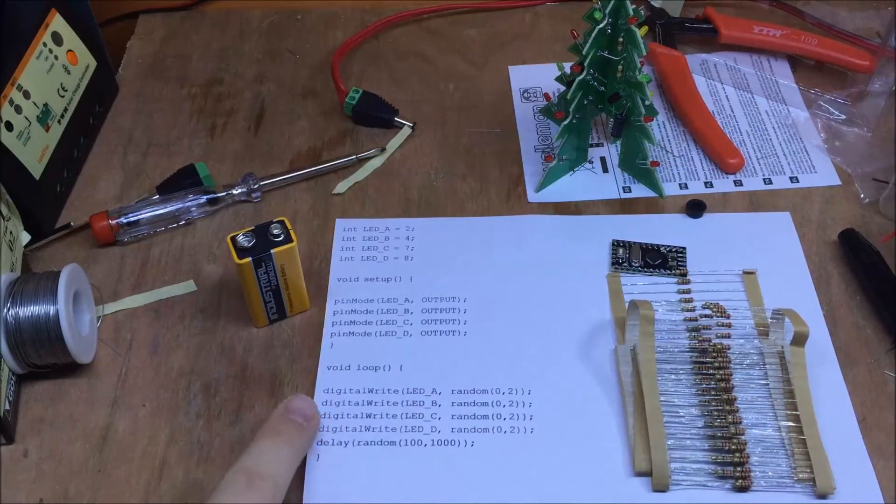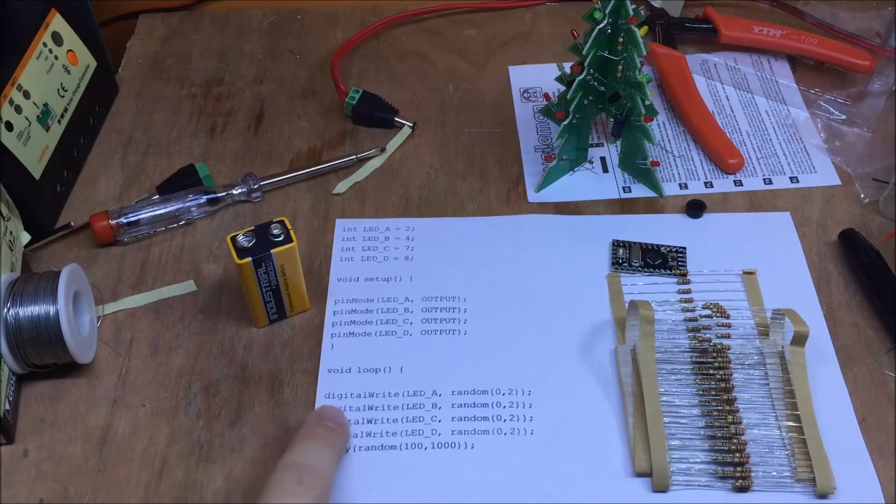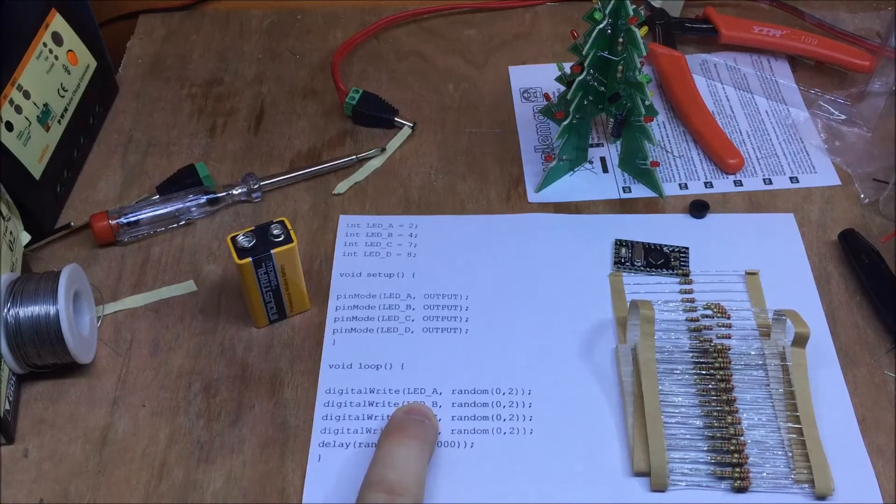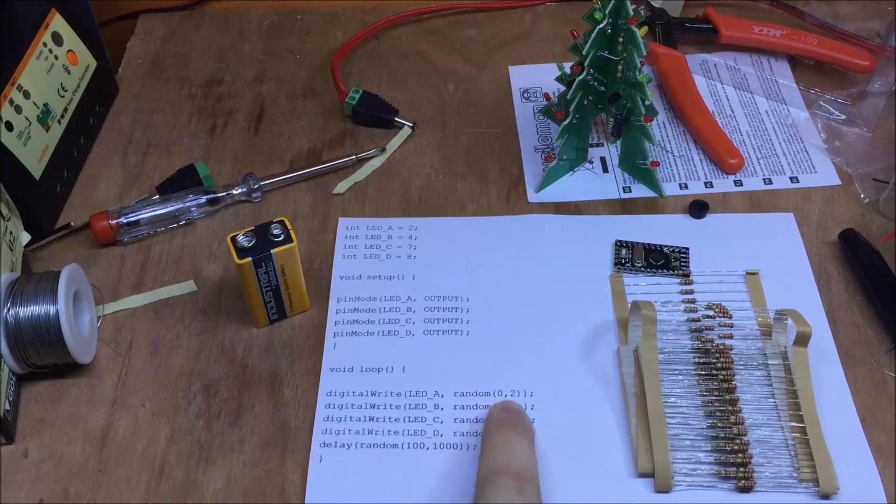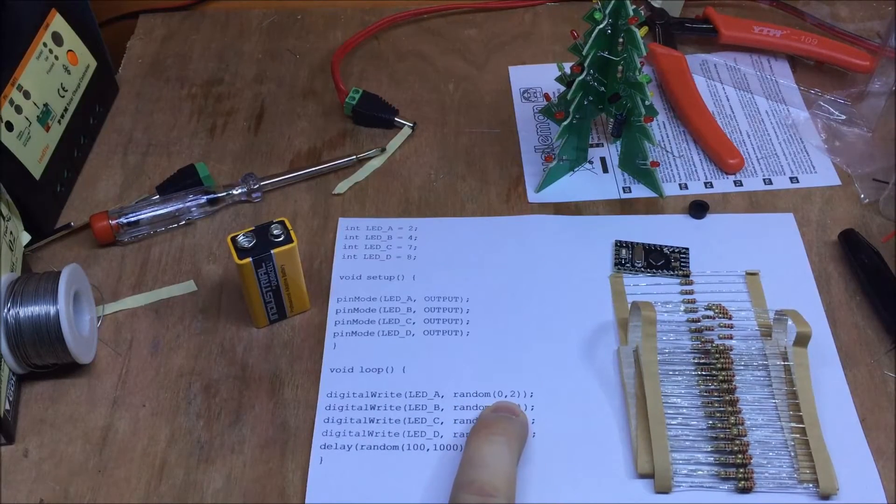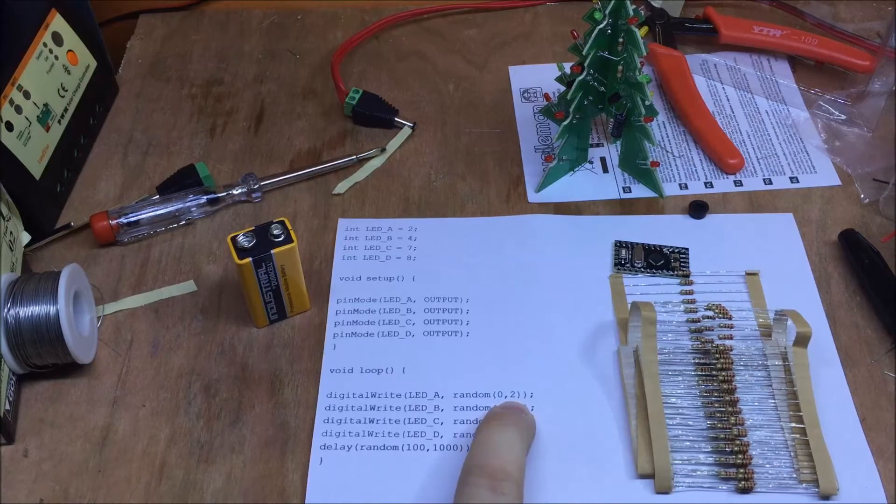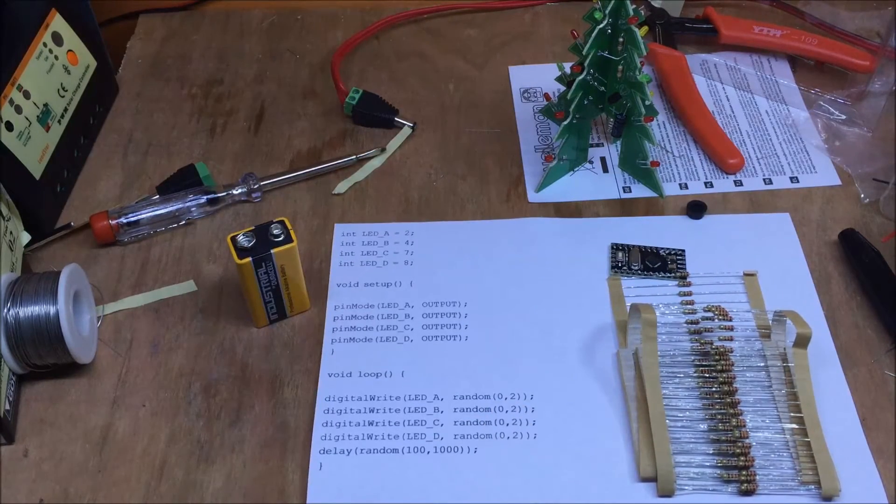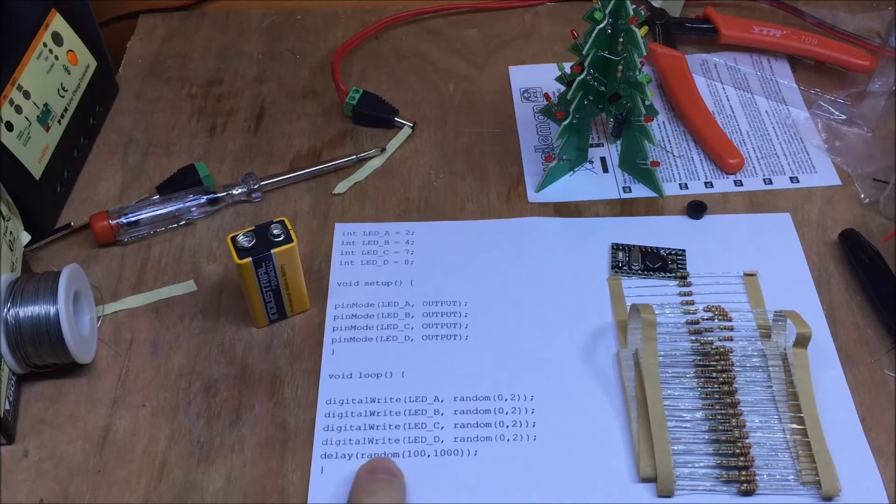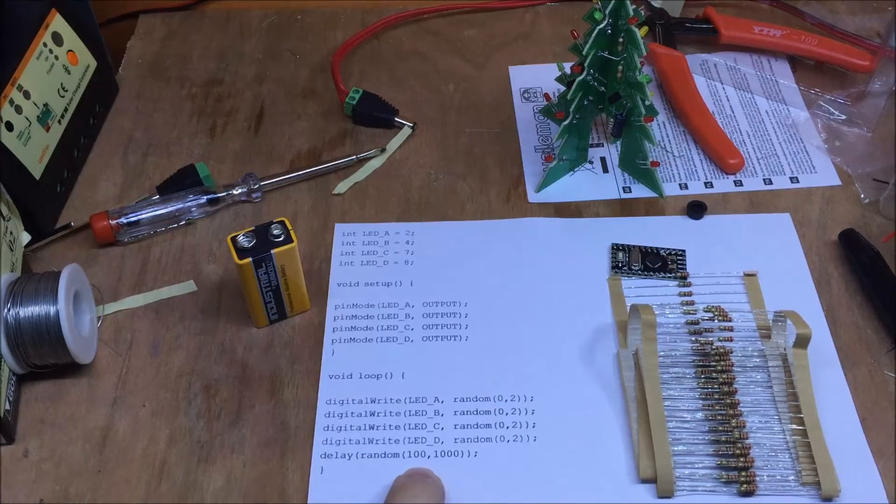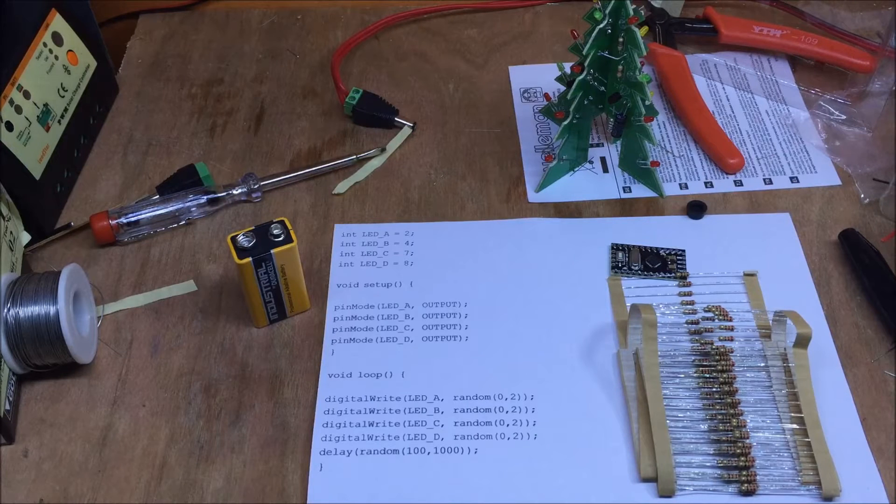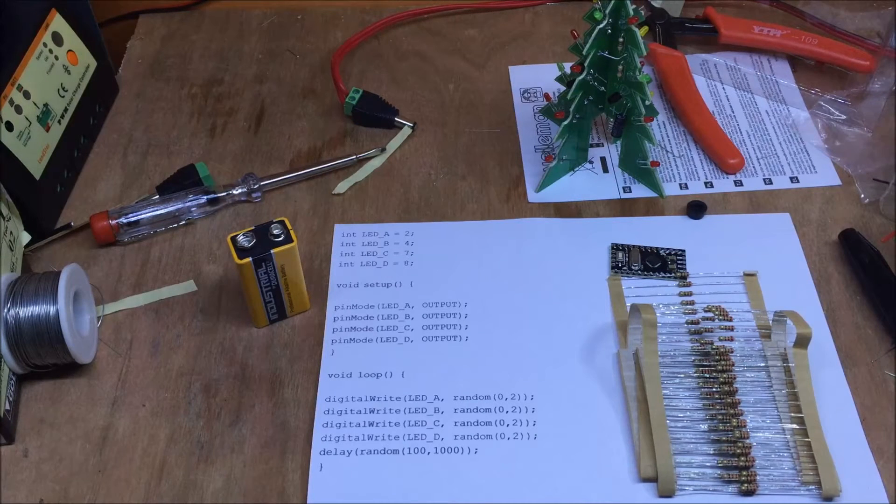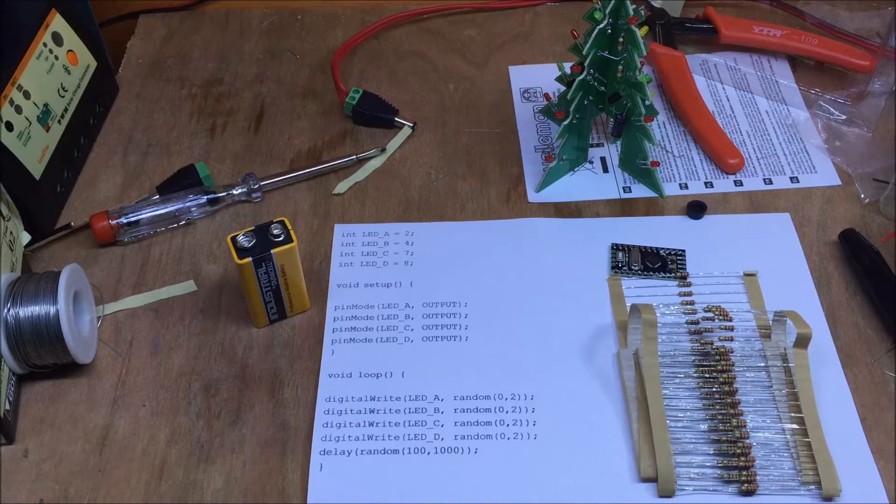Set them all up as output, and the loop is quite simple. We just digital write to each of the LED pins a random, which the lowest it can be is 0, and it needs to stop before it gets 2. I think that's right. And we've also then delayed of random between 100 milliseconds and 1,000 milliseconds, so that should give us a fairly random Christmas tree, hopefully.